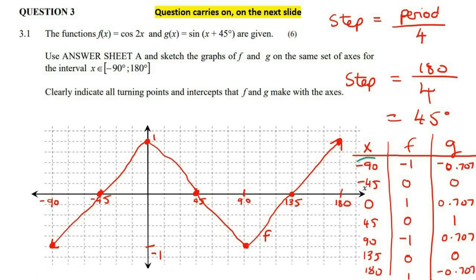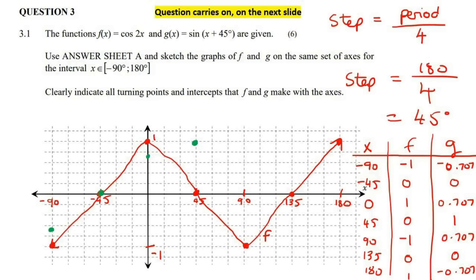For graph g (sin(x+45)): at x = minus 90, y = minus 0.7; at x = minus 45, y = 0; at x = 0, y = 0.707; at x = 45, y = 1; at x = 90, y = 0.707; at x = 135, y = 0; at x = 180, y = minus 0.7. Connect those points and that is graph g. Note: no arrows at the endpoints since we have clear start and end positions.